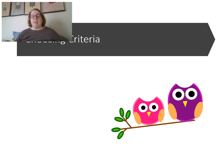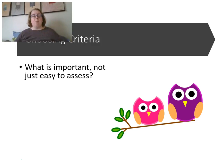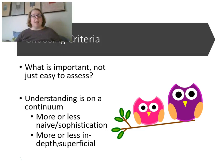The first thing for deciding on an analytic rubric is to choose the criteria — thinking about what's important in the assessment, not just what's easy to assess. A lot of times we focus on things that are easy, such as spelling mistakes or grammar, and it's more difficult to assess understanding or content. We want to think about how to assess understanding on a continuum from more or less naivety or sophistication, more or less in-depth or superficial understandings.